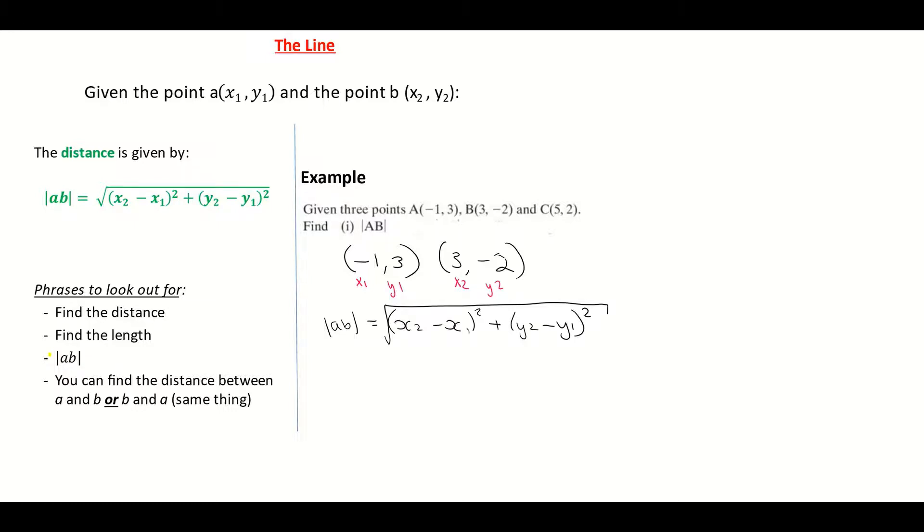Now, I'm going to sub it in. So my distance from A to B is equal to the square root of x₂, which is 3. I'm just going to put them in different colors here. So that's my 3. And then subtracting my x₁, and my x₁ is -1.